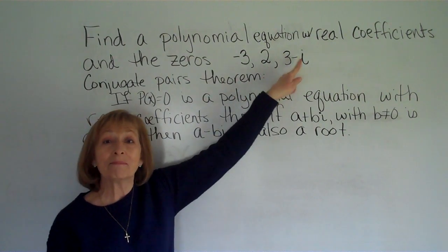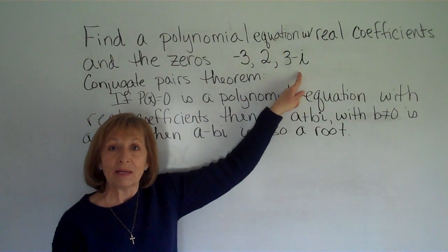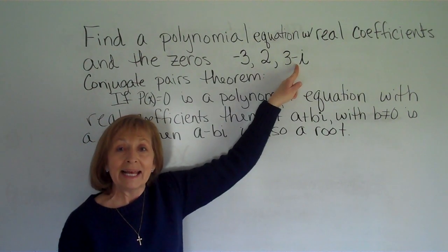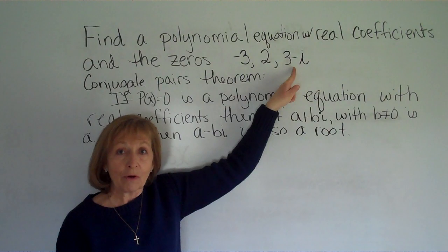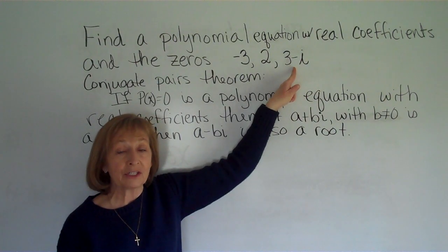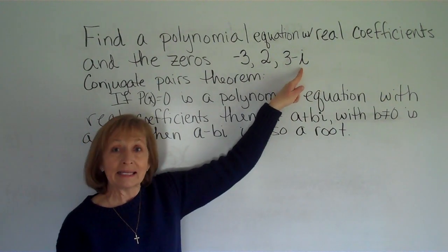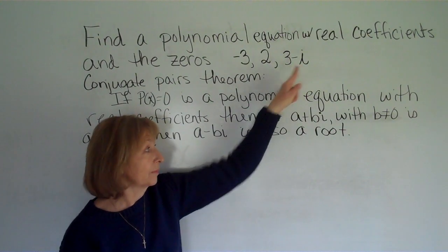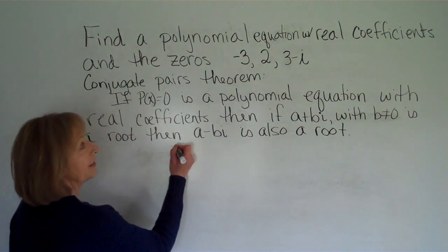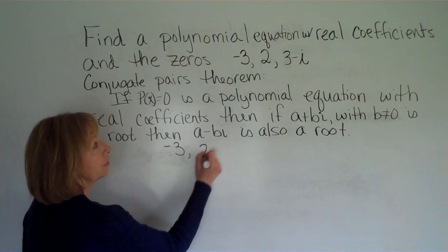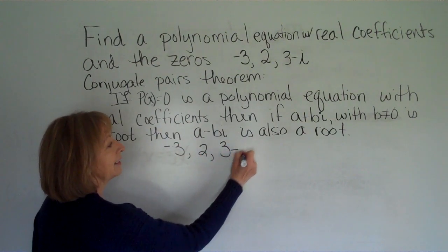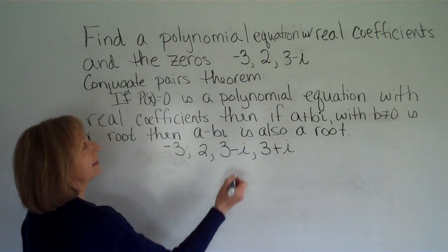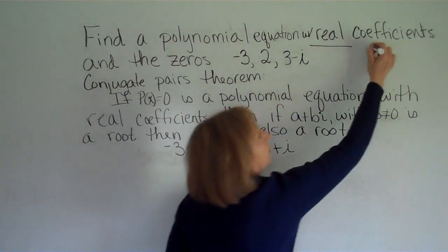But because 3 minus i has an imaginary part with the negative 1 coefficient in front of the i, then since I want real coefficients for the polynomial equation, if 3 minus i is a root, so must 3 plus i be a root. So my roots that I have here are going to be negative 3, 2, 3 minus i, and 3 plus i to get the real coefficients.